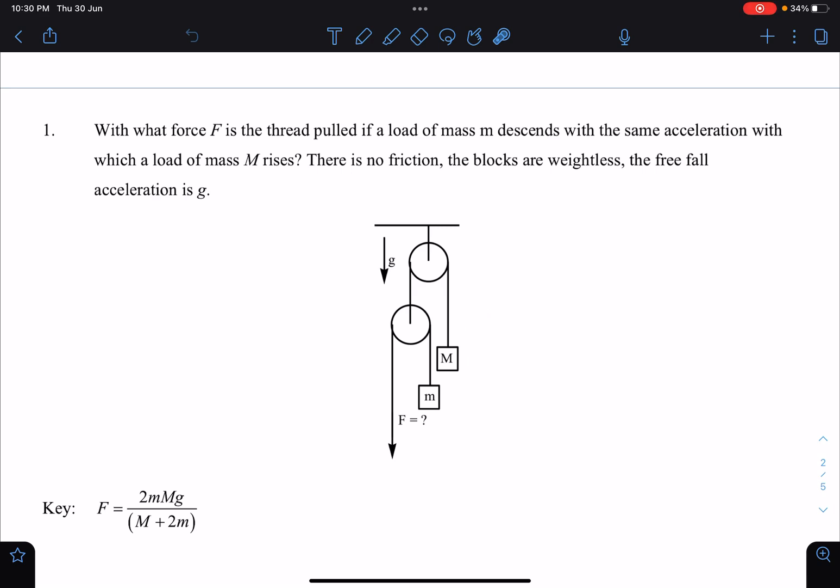The pulleys are weightless, the thread is massless, and the pulleys are frictionless. The free fall acceleration is g.